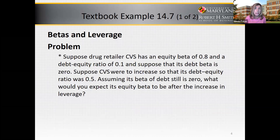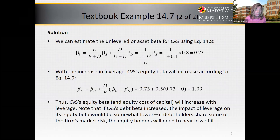Let us look at an example from the textbook. Suppose drug retailer CVS has an equity beta of 0.8 and an initial debt-equity ratio of 0.1 and a debt beta of 0. Suppose CVS were to increase its debt so that its debt-equity ratio becomes 0.5. Assuming its debt beta is still 0, what would you expect its equity beta to be after the increase in leverage? We can estimate the unlevered or asset beta for CVS using textbook equation 14.8.